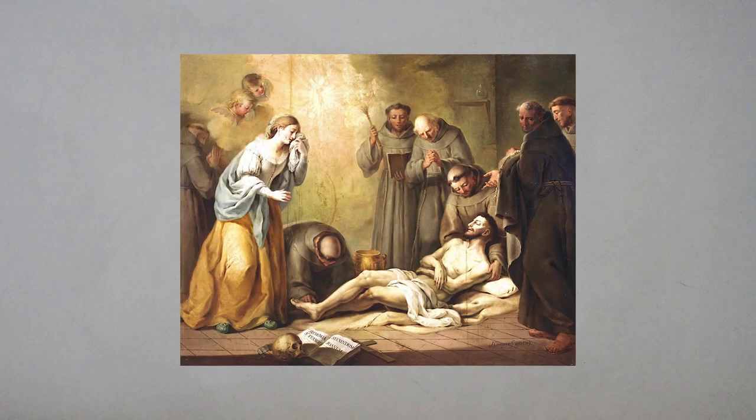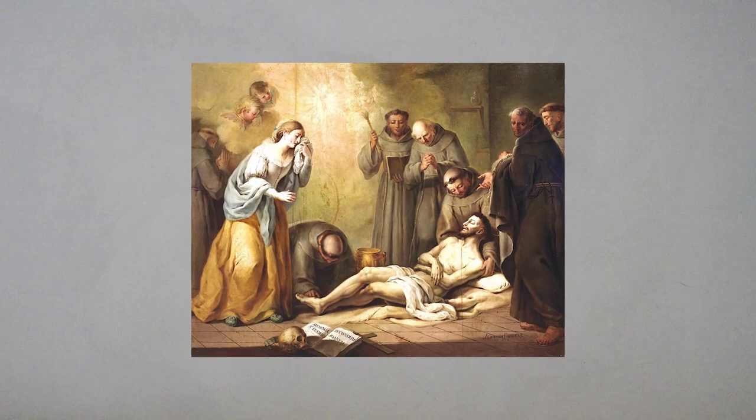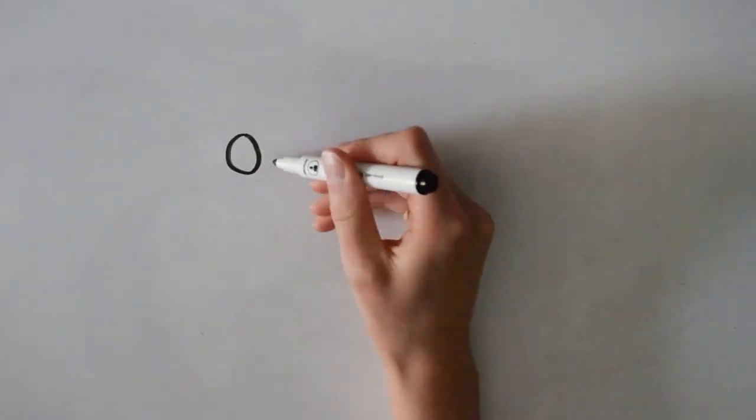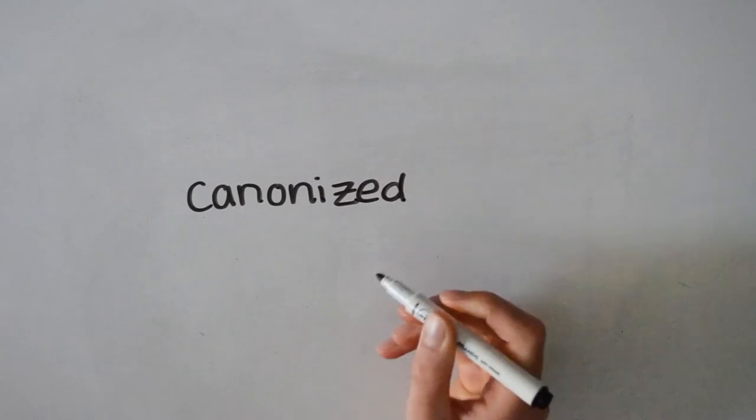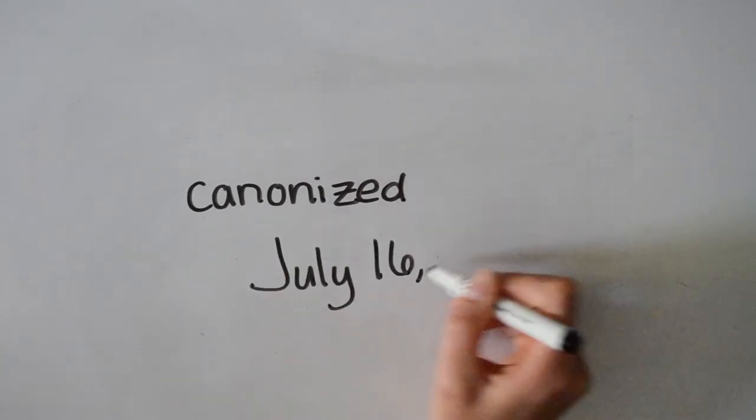St. Francis died naked on the ground at his request so that he could be more like Christ on October 4th, 1226, at the age of 45. He's considered the founder of all Franciscan orders. He was canonized by Pope Gregory IX on July 16th, 1228.